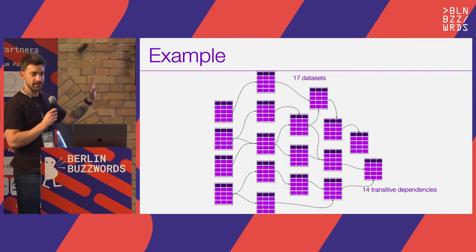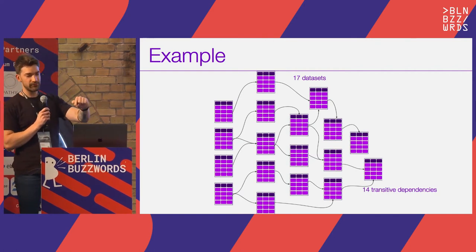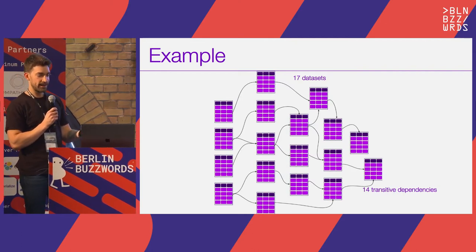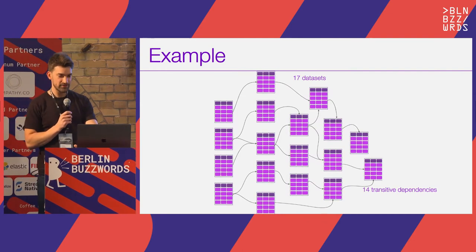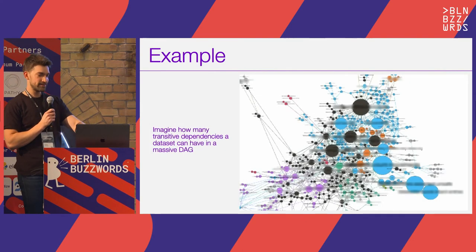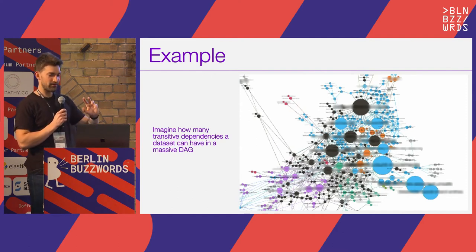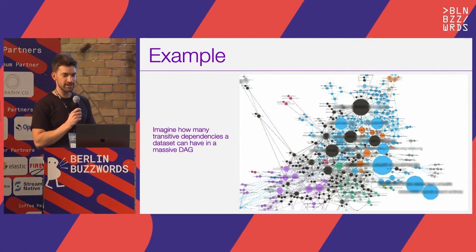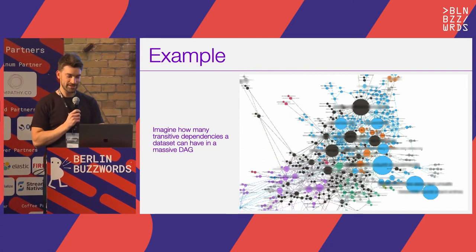For example, imagine a simple DAG with 17 datasets all depending on each other — the leaf nodes have 14 transitive dependencies. If you have implicit dependencies across teams and no ownership on those datasets, it's not going to scale well. A simple limit that could spark discussion — even if arbitrary at first — is to limit the number of transitive dependencies a dataset can have. If a data scientist creates a new dataset depending on four datasets that have many transitive dependencies upstream, hitting a limit of say 10 will spark a redesign discussion.